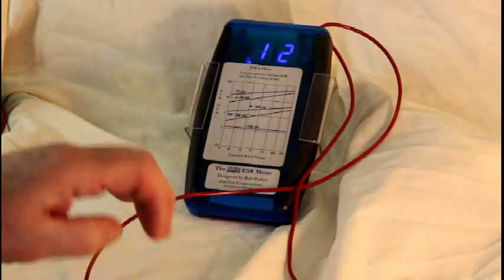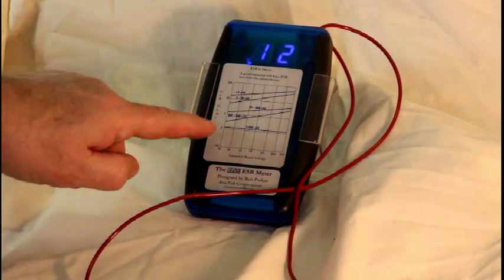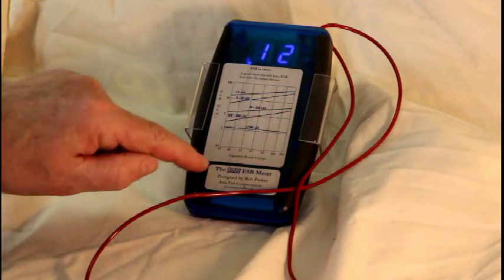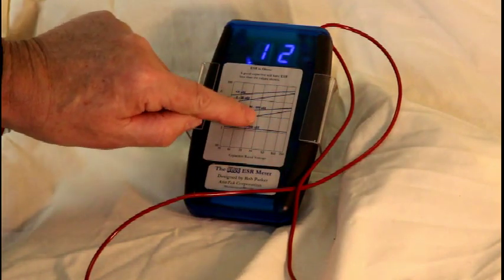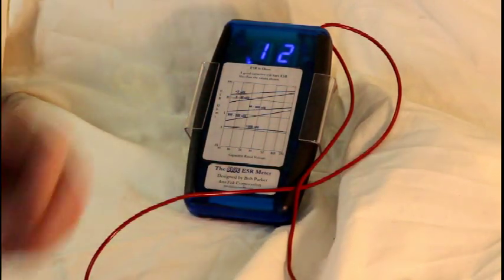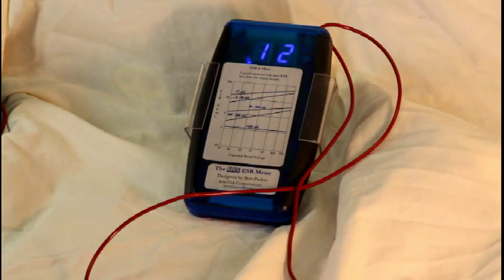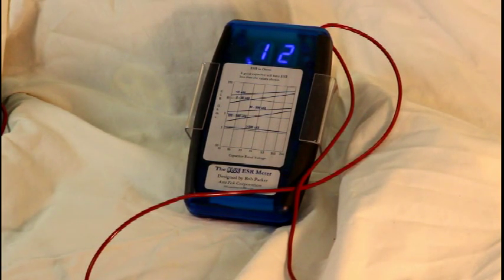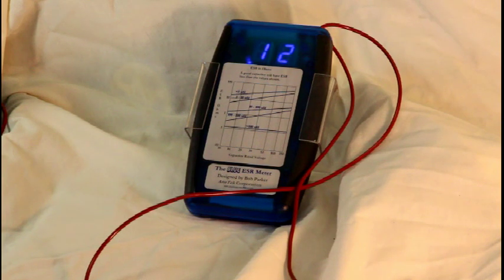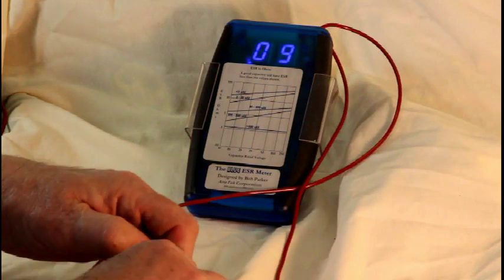This one being 220 microfarads at 35 volts will fall on this line here. Go down to the 35 volt line, crosses the 1 ohm axis. So the maximum value of ESR for a capacitor to be good would be 1 ohm. This one is reading 0.12 ohms, well within the range of good ESR. So that capacitor is good.